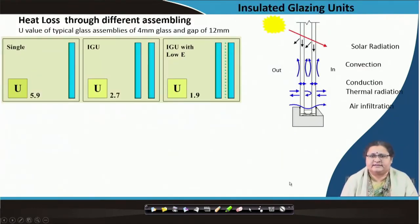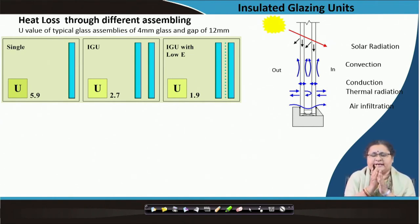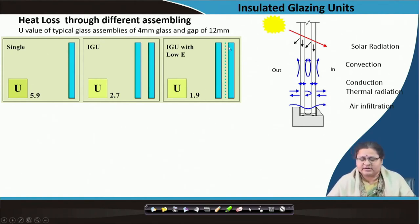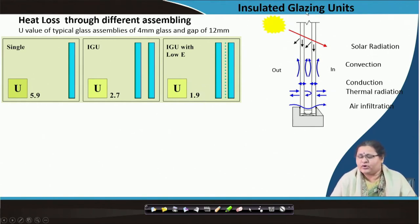Till now whatever we discussed was around single glazing — as you see the U-value is 5.9. When two panes are there with an air gap of almost 12 millimetres in between and the glass plates are 4 millimetres each, it reduces the U-value to even more than half. In the third picture, the U-value has further gone down with the addition of a low-E lamina. If you add a low-E lamina inside while making the unit, it will further reduce the U-value.